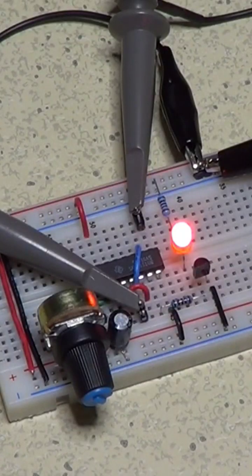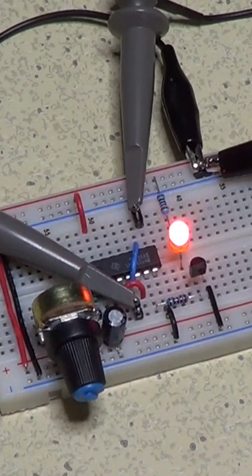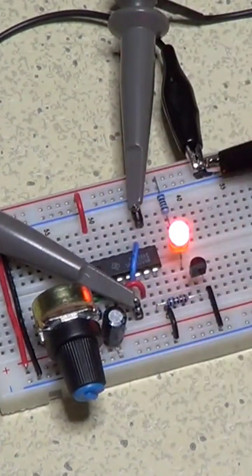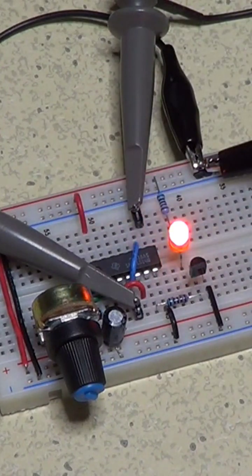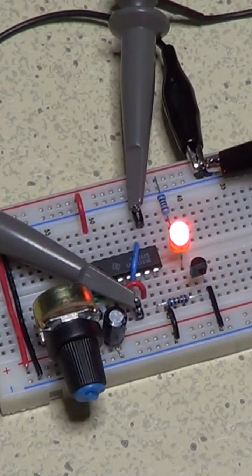The circuit is now powered up and the oscilloscope probes are connected to both the Q and not Q outputs. You can see the blinking LED that tells us that the circuit is working. Let's take a look at the oscilloscope now.